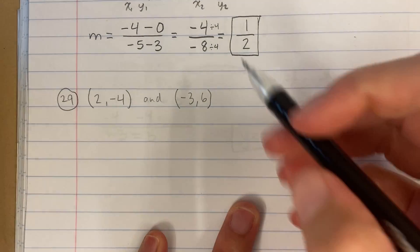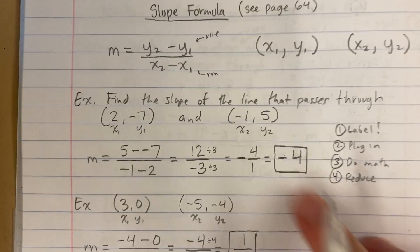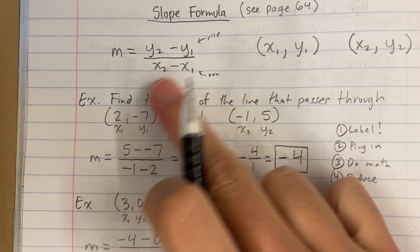Here's question 29. I need to use the slope formula. So the slope formula is y2 minus y1 over x2 minus x1.